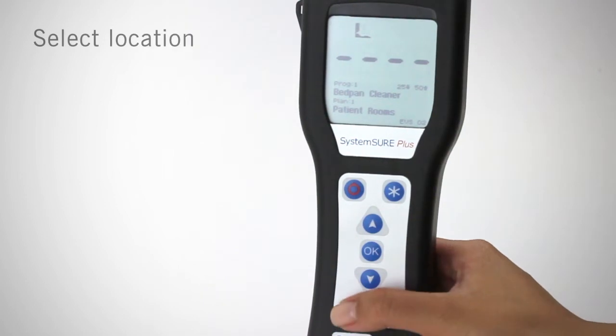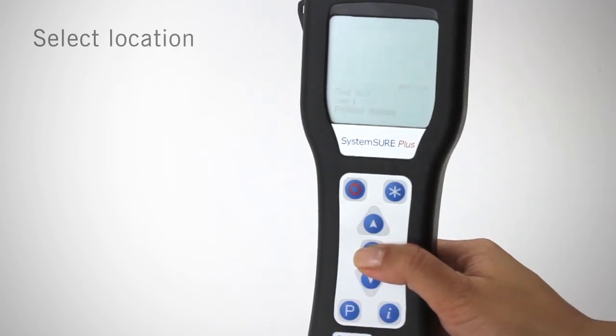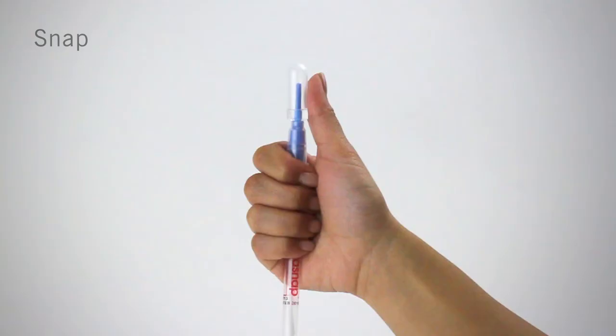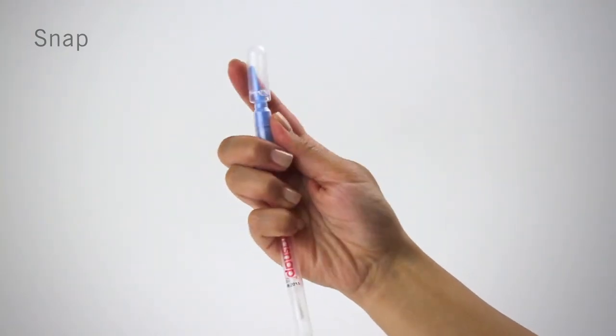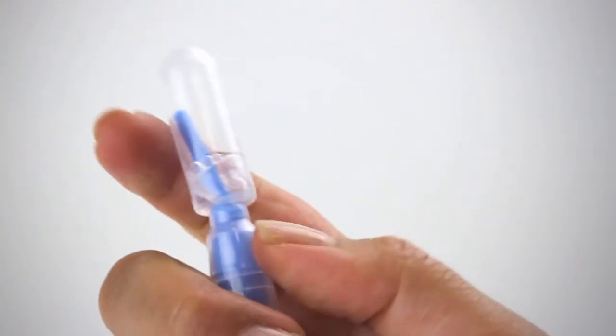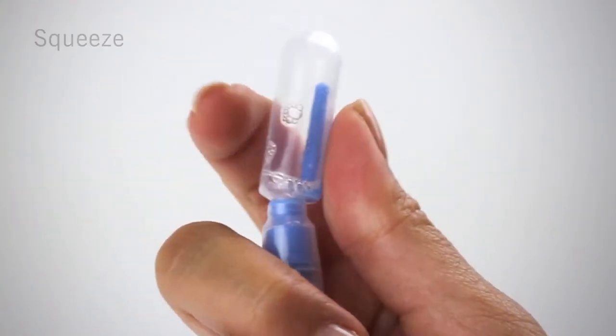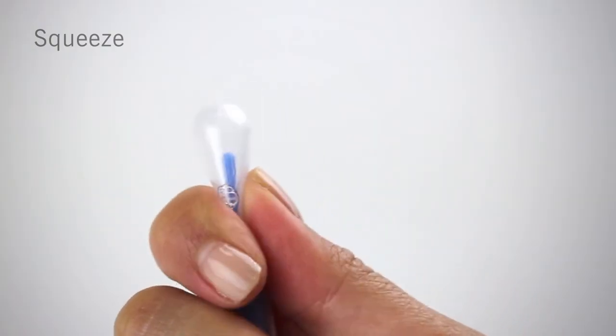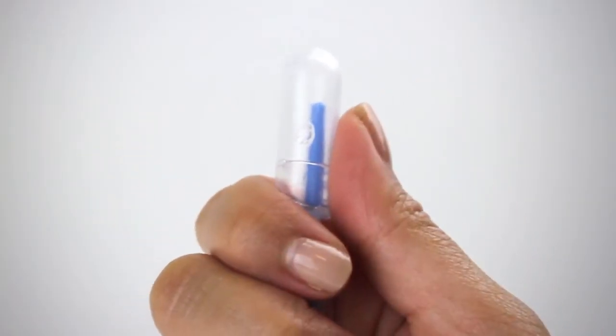The second step is activation. Turn on the luminometer. If you program locations, select the location to be tested. The easiest way to activate UltraSnap is to hold the device in your fist and use a thumb and forefinger to break the snap valve by bending the bulb forward and backward. Then squeeze the bulb twice to expel liquid into the tube. Now shake for 5 seconds.